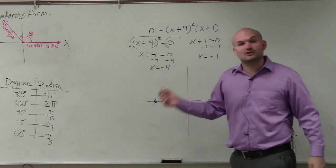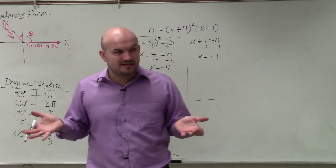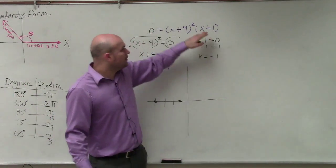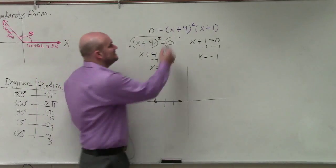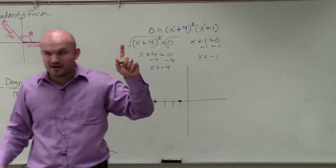First of all was the multiplicity, right? And if you remember, we talked about multiplicity. Multiplicity was the power of our linear factors. Do you see how these are two linear factors? Our variable x is raised to the first power. Does everybody see that?